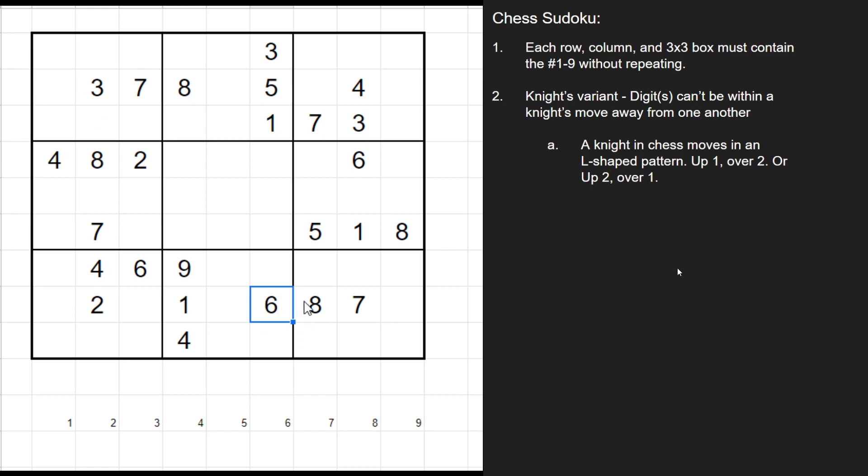So for instance, we look at this 6. This 6 could not be in these 3 cells, which is a Knights move away. If we go up 2, over 1, or over 2 and up 1, or down 1 and over 2. So you can see what I mean by a Knights move away.